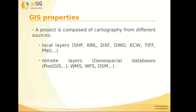A GIS project is composed of cartography from different sources. We have local layers — for example, vector and raster layers on our computer such as shapefiles, KML, DXF, or raster files. We also have remote layers, such as web services like Web Map Service (WMS), Web Feature Service (WFS), or OpenStreetMap data.